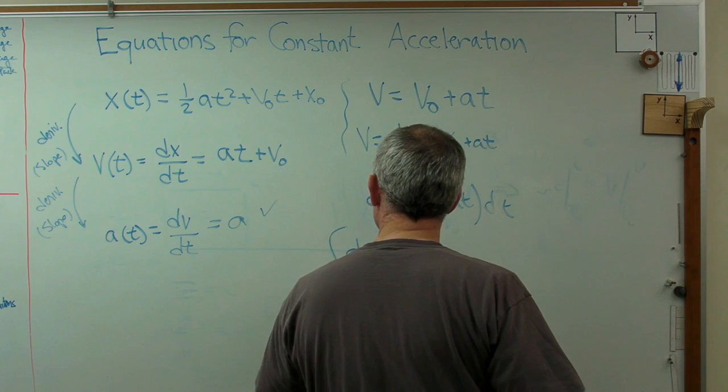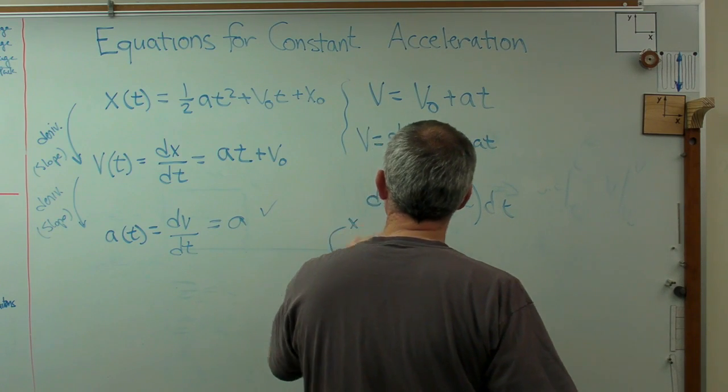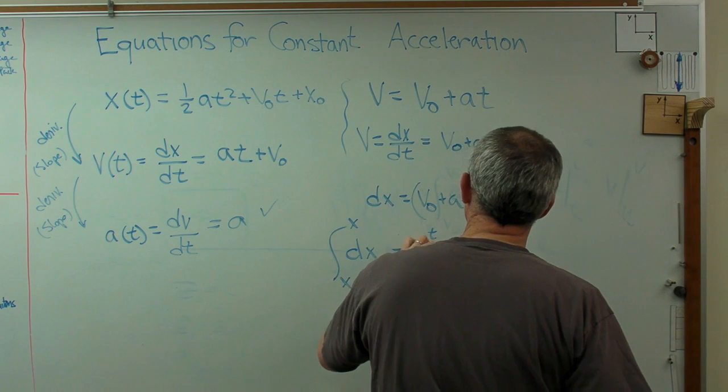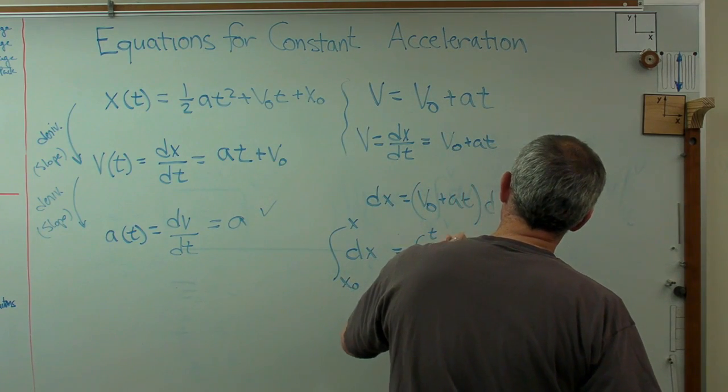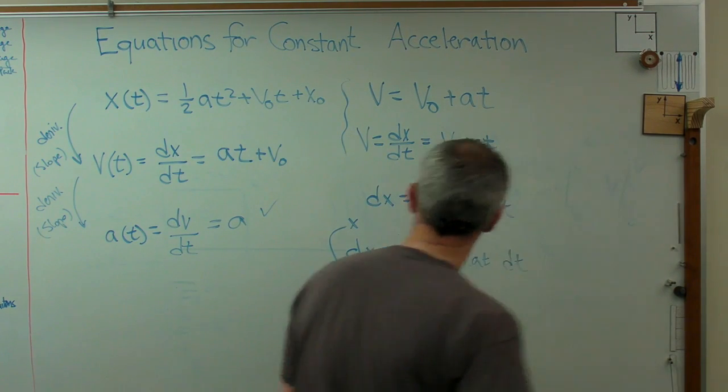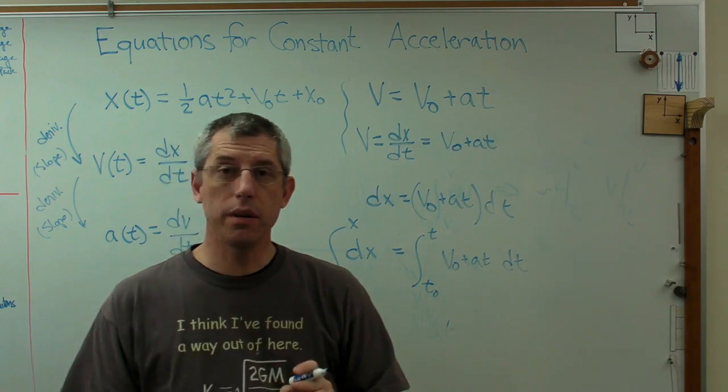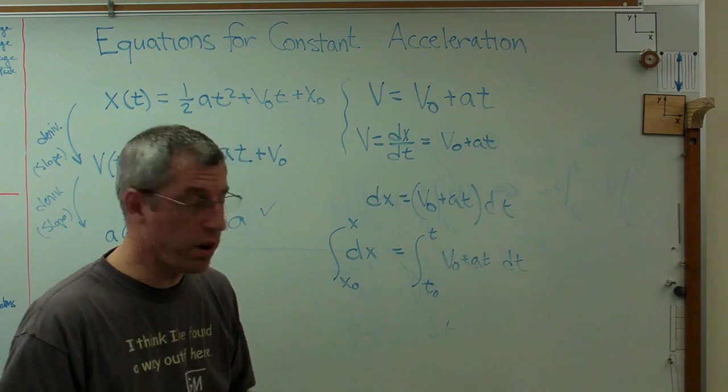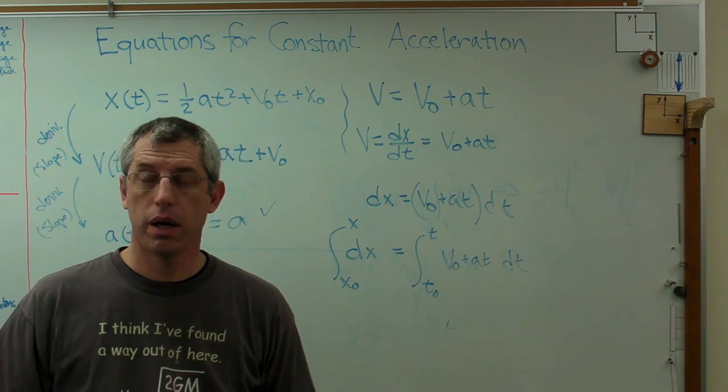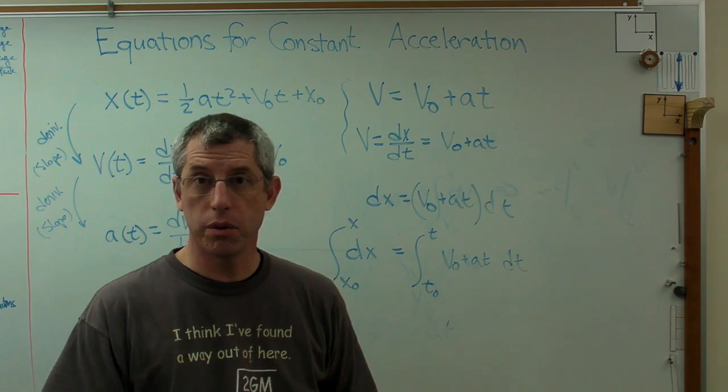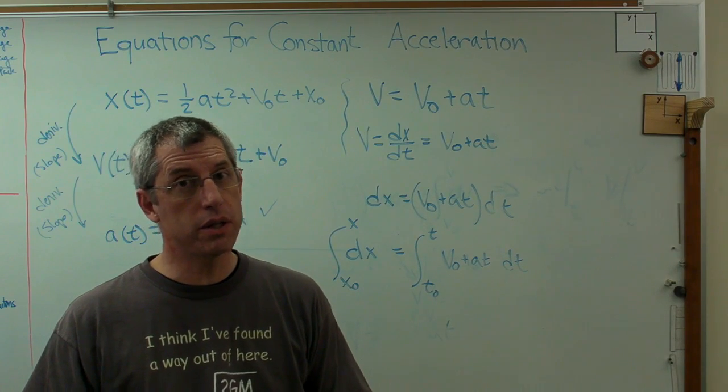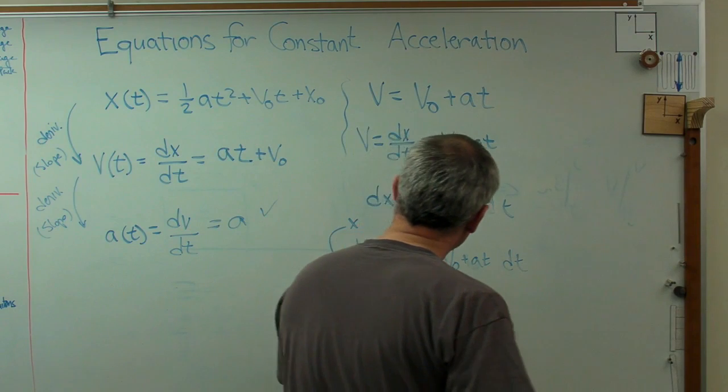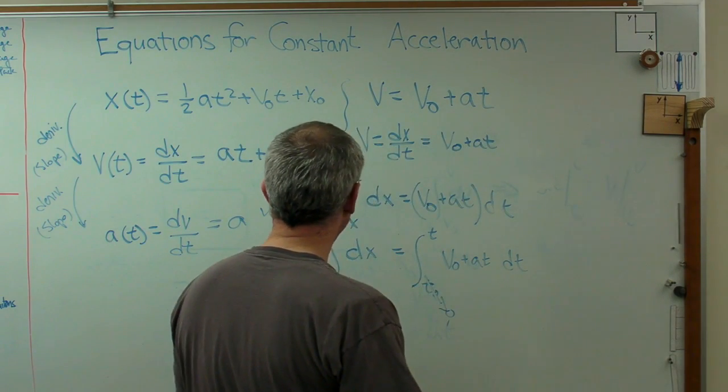The integral of dx from x0 to x equals the integral from t0 to t, v0 plus at dt. I'm doing the exact same thing I did last time. I multiplied through by dx, and I'm integrating over the same integration limits before. I've got to use the same integration limits this time as I did last time. And that goes to zero again.